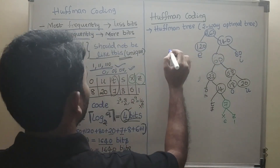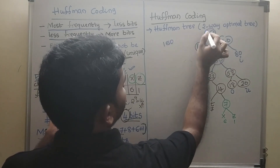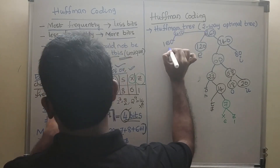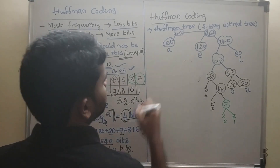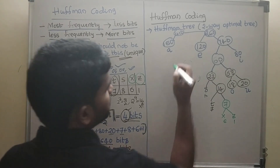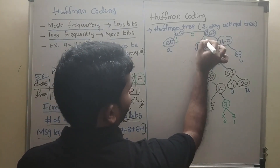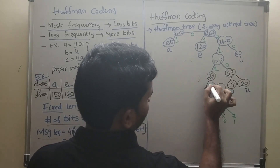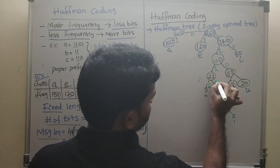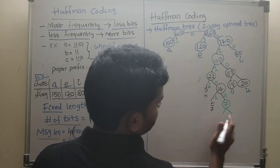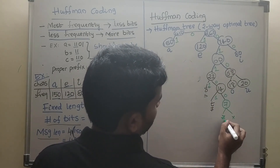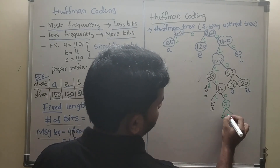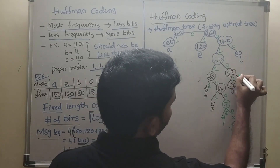Then 260 and A (150): 150 is less, so we get 260 + 150 = 410. The character on the left side is A. From the tree structure, we assign bits — 1 and 0 — along each branch to derive the codes for each character.